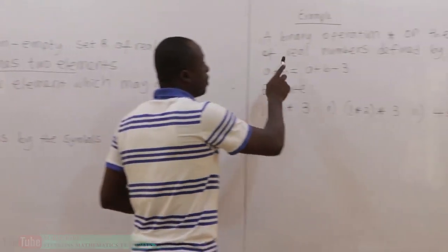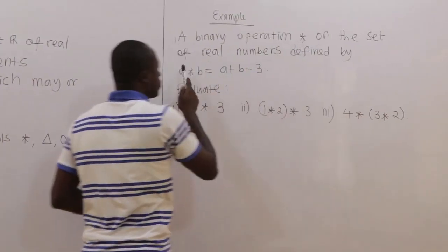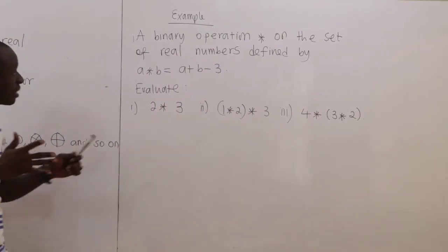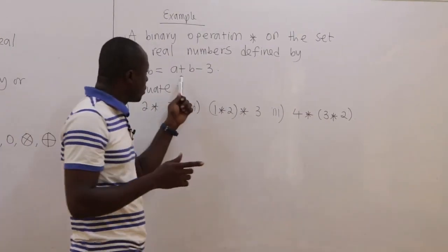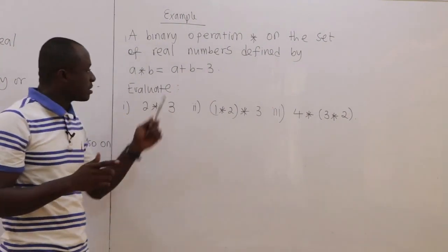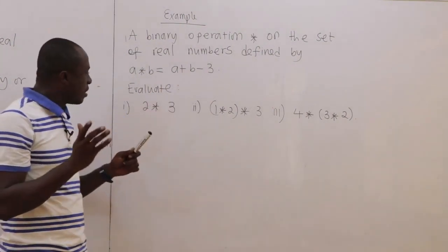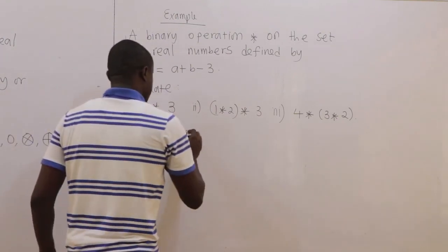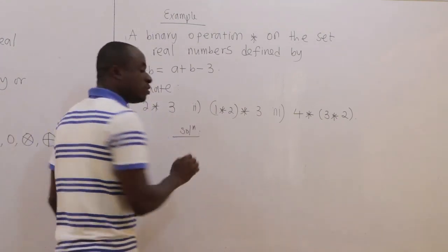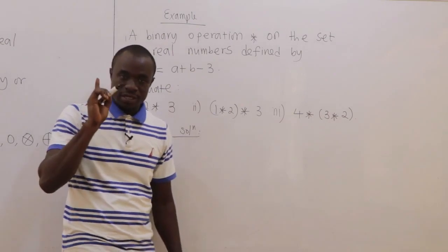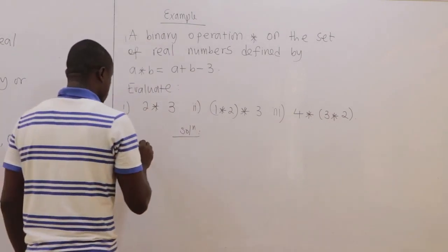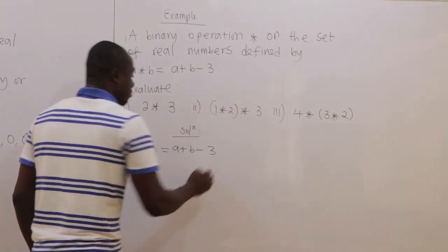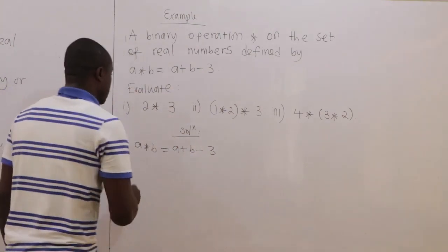A binary operation star on the set of real numbers is defined by a★b = a + b − 3. This is the rule which has been given to us. The first thing we do is put the rule down: a★b = a + b − 3.